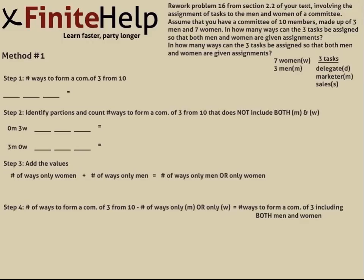The posted problem reads: We rework problem 16 from section 2.2 of your text involving the assignment of tasks to the men and women of a committee. Assume that you have a committee of 10 members made up of 3 men and 7 women. In how many ways can the 3 tasks be assigned so that both men and women are given assignments?